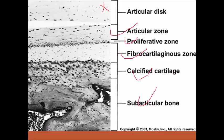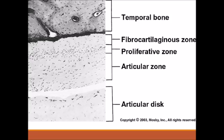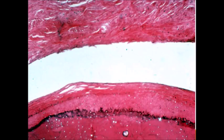The same layers are seen in the cranial part — the glenoid fossa and articular eminence — except that the calcified cartilage layer is very limited. From the temporal part section, we have: the articular disc, the upper joint cavity, the articular zone, the proliferative zone, the fibrocartilaginous zone, the calcified cartilage (very thin), and then the temporal bone.